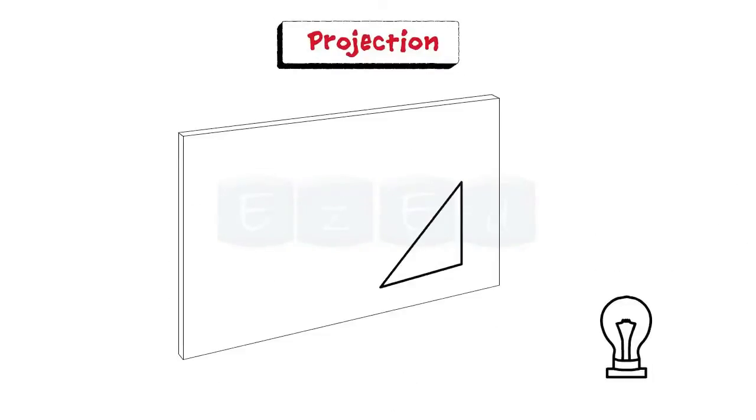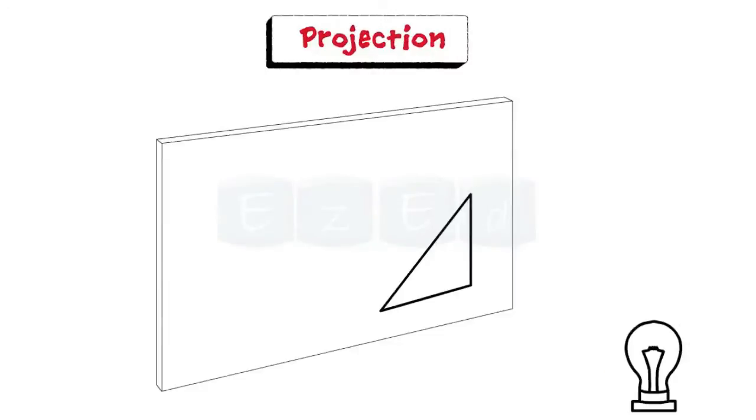First, let us see what is projection. Consider an object placed in front of a source light. When the light is turned on, the rays project the outer surface of the object in front of the screen. The object appeared on the screen is the projection of the original object.